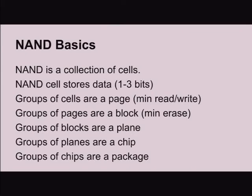Groups of cells are together to form a page. A page is the minimum read or write unit when addressing NAND. Groups of pages form a block. To write to a page, you can write to it once, but then to write to it again you have to erase it — and you can't just erase one page, you have to erase all the pages in that block. Groups of blocks form a plane, groups of planes are on a chip, and groups of chips are in a package.